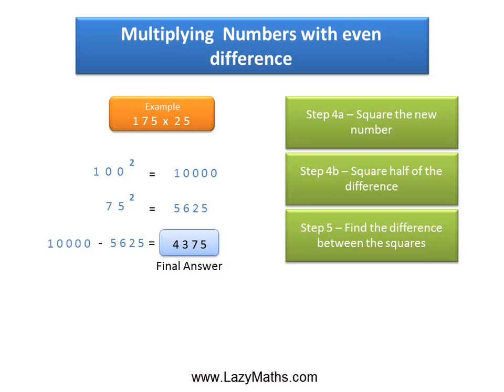Here again you can actually use another shortcut available on lazymaths.com which shows you how to subtract numbers from powers of 10. Using that you can subtract 5625 from 10,000 and you will get the answer as 4375. So, 175 times 25 equals 4,375, and that's it. Thank you.